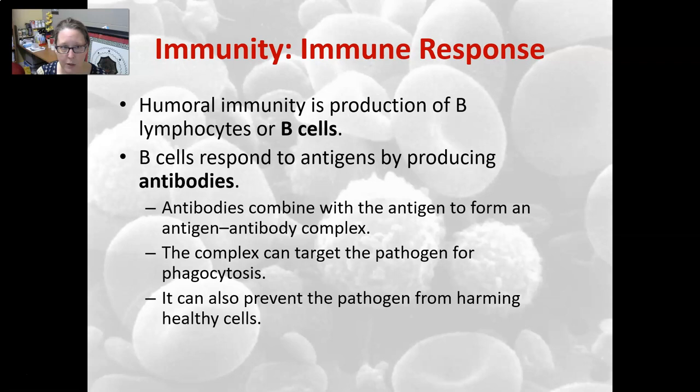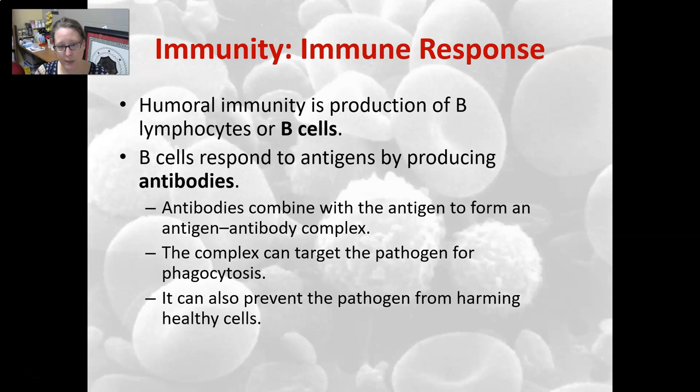Antigens can be proteins on the surface of bacteria, parasites, or spike proteins on a virus — anything foreign can trigger antibody production. The antigen-antibody complex targets the pathogen for phagocytosis by other white blood cells, and can also prevent the pathogen from harming healthy cells. For example, antibodies coating a virus's spike proteins prevent the virus from entering cells.